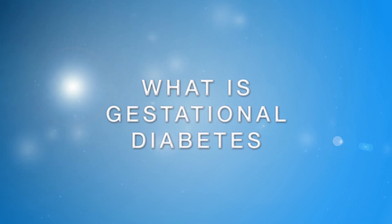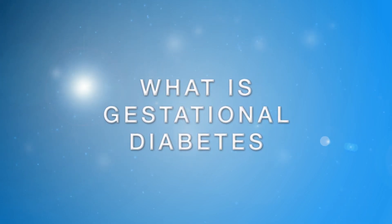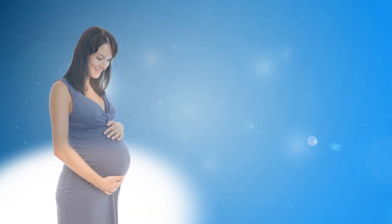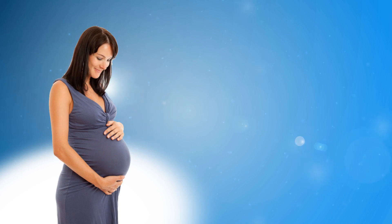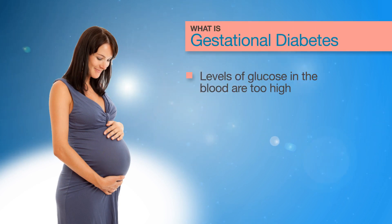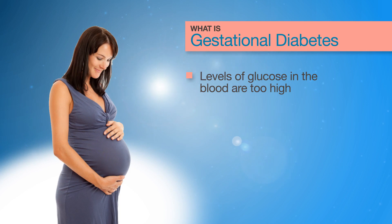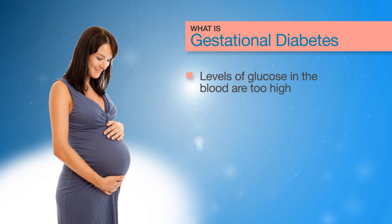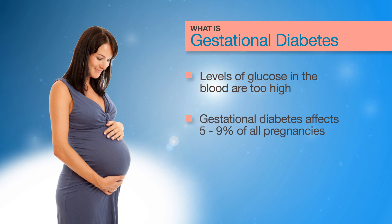What is gestational diabetes? Diabetes is a condition where the levels of glucose in the blood are too high. Gestational diabetes is a type of diabetes that occurs during pregnancy, affecting approximately 5-9% of all pregnancies.